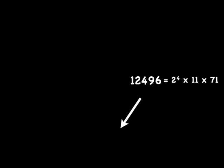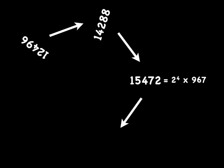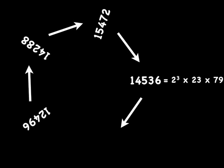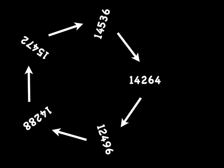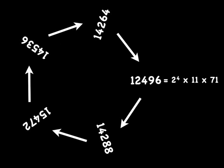Here is the chicken-and-egg sequence: 12496 goes to 14288, goes to 15472, goes to 14536, goes to 14264, which goes back to 12496 — a complete five-number circuit. That is why 12496 is just as special as 496. And there is an unsolved problem in mathematics: does one of these loops exist with just three numbers, not five?